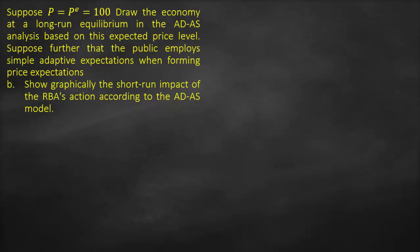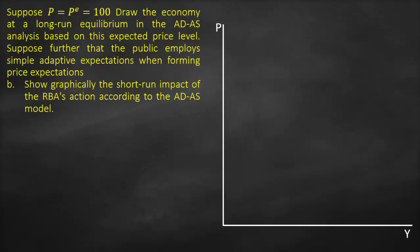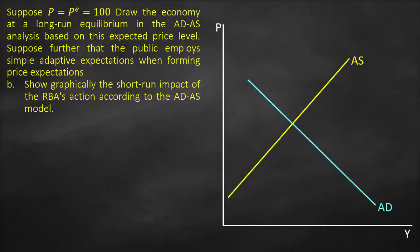The second part of the question: show graphically the short-run impact of the RBA's action according to the aggregate demand-aggregate supply model. We start by drawing our y-axis, which is the price, our x-axis, which is our output. This is our upward aggregate supply curve, this is our downward aggregate demand curve, and at the point of intersection we draw our long-run aggregate supply curve. All curves intersect at the same point, which is point A, giving us equilibrium price P1 and equilibrium output, our potential output, Y* or Y1.